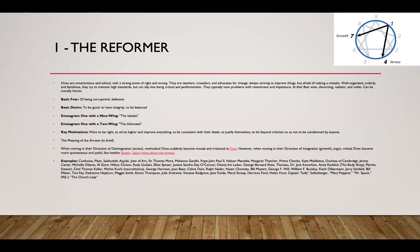Looking at the one, the perfectionist - if you're in growth mode you become more of a seven, the enthusiast. If you're in stressed mode you become more of a four, that creative and more withdrawn individual. The basic fear of the one is becoming corrupt or evil or defective. Enneagram one with a nine wing is the idealist; with a two wing is the advocate - the perfectionist who asks how do I help you the best.